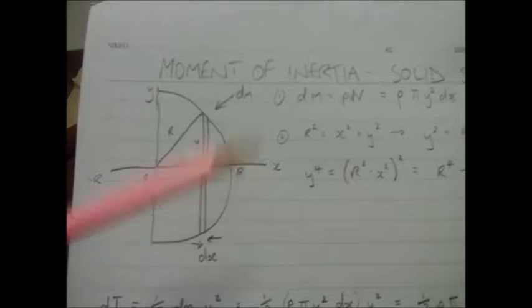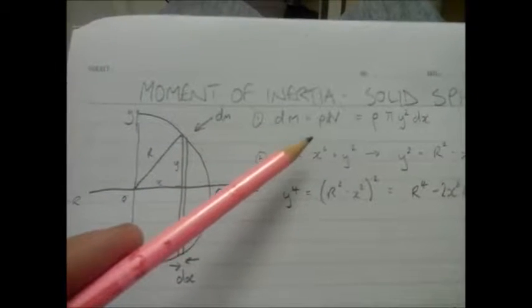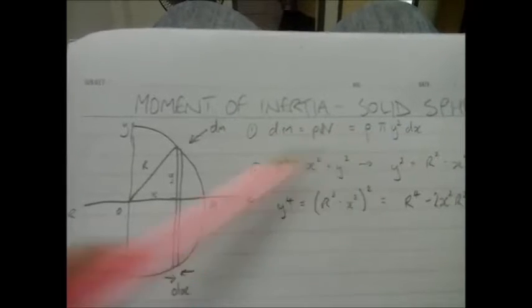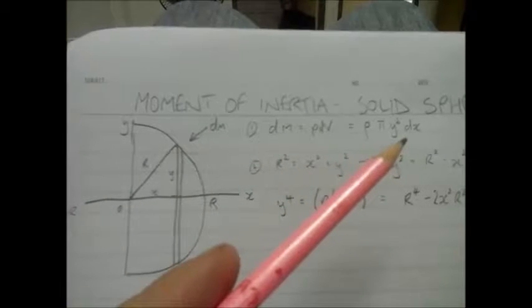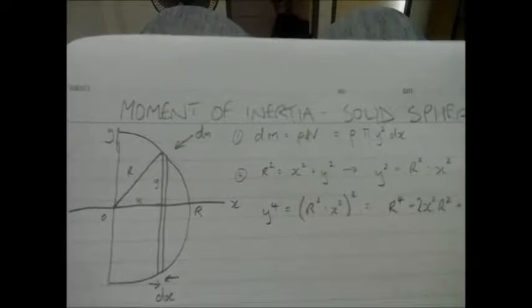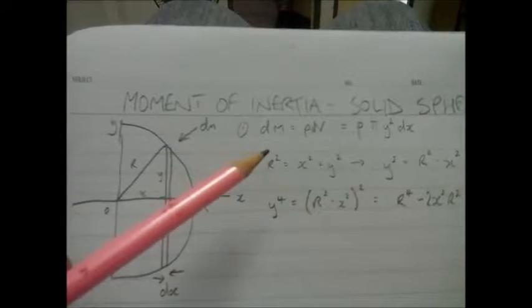So that'll be a cylinder. I can write the mass of that cylinder will be the density times the volume. There's the density ρ times the volume of the cylinder πr², but the r in this case will be y, and the thickness will be dx. So that's the dm, the mass of that slice of cylinder.